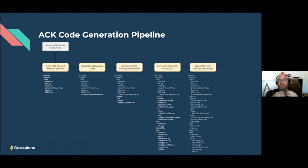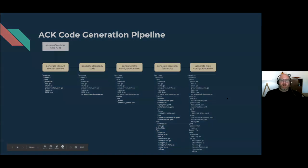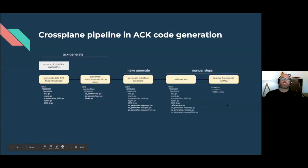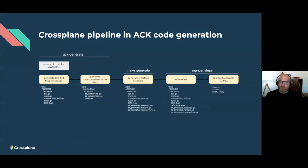The code generation pipeline goes through a set of phases where we're generating different sets of files for an ACK service controller. What we did was adapt the ACK code generator — a CLI tool called ACK generate — so that instead of generating the ACK service controllers, we have a set of templates that help generate the Crossplane provider AWS internal code. And this is where Muvavak is going to take over.